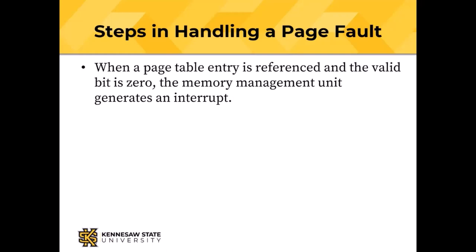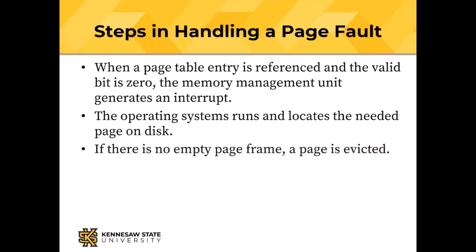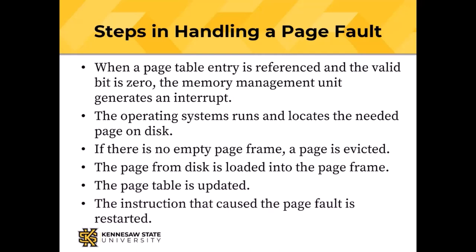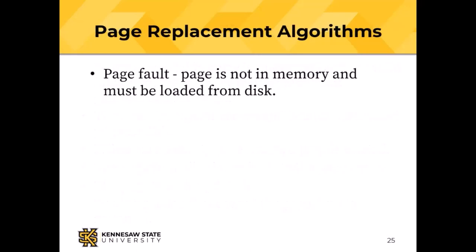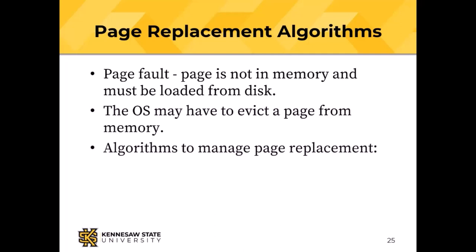When a page that is not in main memory is accessed, it causes a page fault, and it's the job of the operating system to copy that page from disk — magnetic disk or SSD — into a page frame in real memory. The first step is to check whether the page is in memory at all. If the valid bit is zero, the memory management unit generates an interrupt, the operating system finds the needed page on disk. If an empty page frame is available, it uses it. If not, a page must be evicted from main memory. Then the page from disk gets loaded into that page frame, the page table gets updated, and the instruction that caused the page fault is restarted.